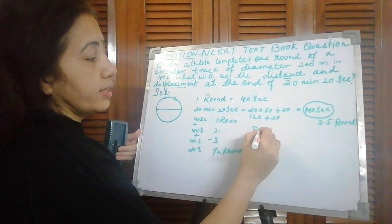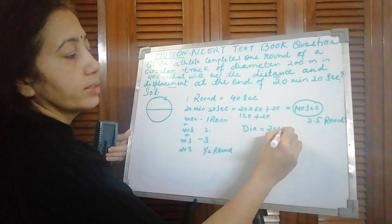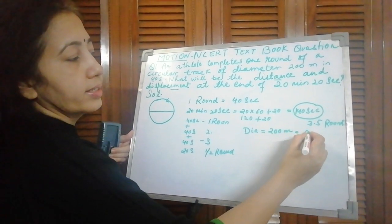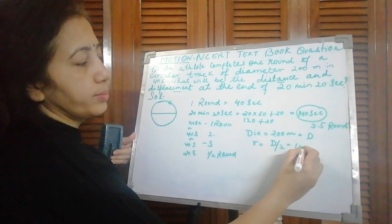Now the diameter which is given is 200 meters. So radius will be d by 2, that is 100 meters.